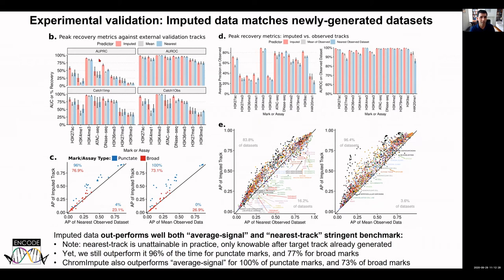We've also used independent experimental data generated after our imputations to show that the predicted data sets are very high quality, surpassing the stringent benchmark of the nearest track. The nearest track imputation means choosing the observed data set closest to the target after observing the data — an unattainable standard in practice. Remarkably, our imputation without knowing the observed track does better in 77% of cases for broad marks and in 96% of cases for punctate marks, even compared to this unrealistic comparison.